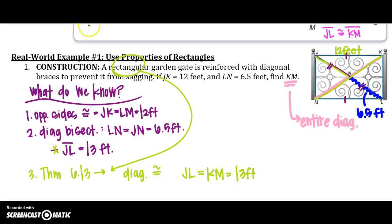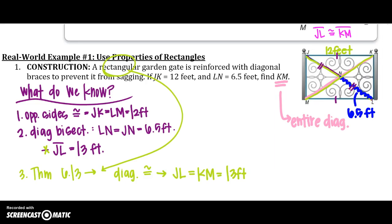So because those diagonals are congruent, if I can find one, I can also find the other. Something else you could find, because I know all of these are right angles - could I find KL?